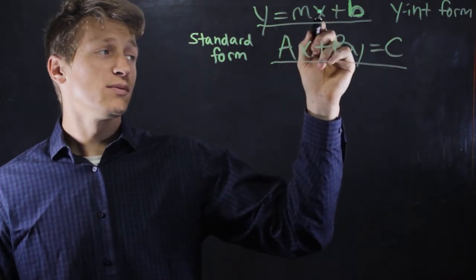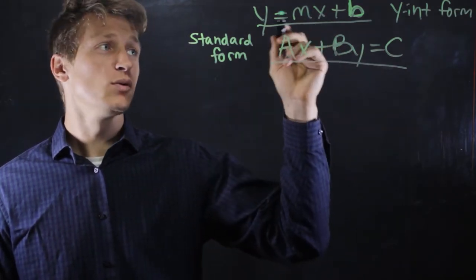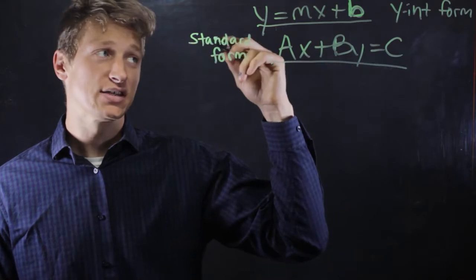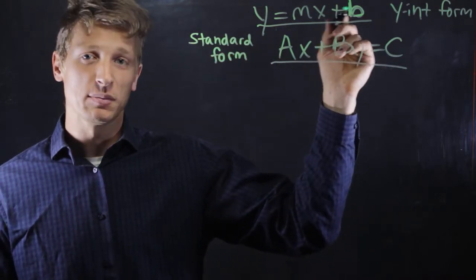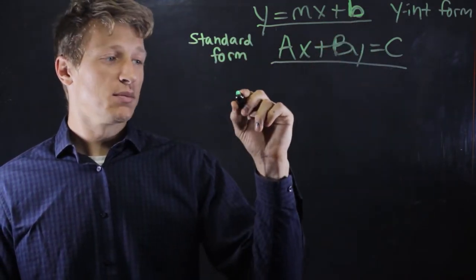To change the y-intercept form into the standard form, we move the y and the x to the left side, and we essentially solve for b. So let's take an example.